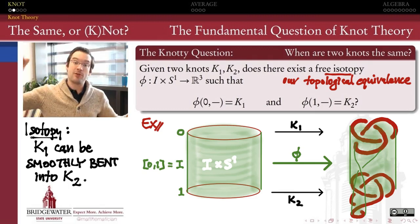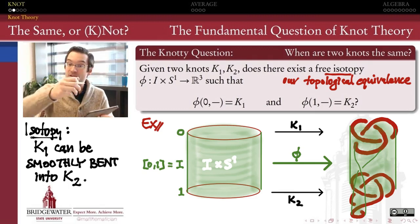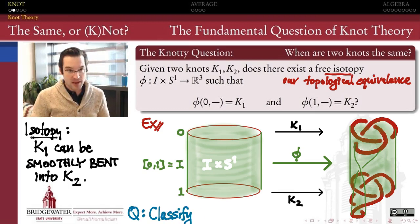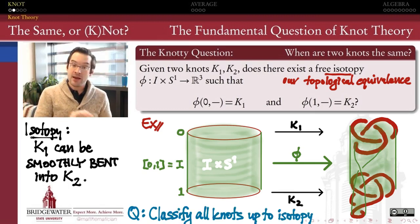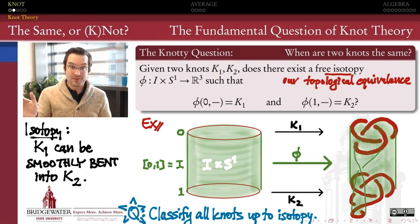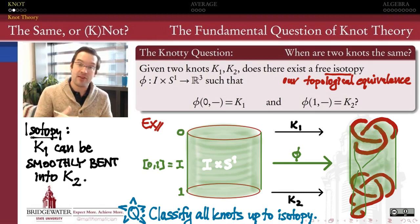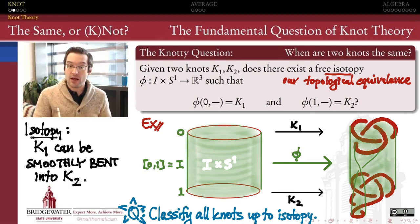We can make the knot bigger, smaller, or twist it a little bit more if we want to, but we can't cut it or do anything discontinuous to it. That's our notion of equivalence called isotopy. So that frames the fundamental question of knot theory as: how do we classify all knots in the universe up to isotopy? What knots exist, and most importantly, how can we tell two different knots apart from one another?